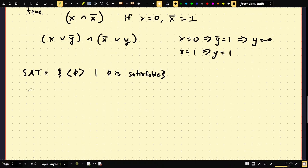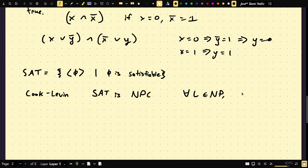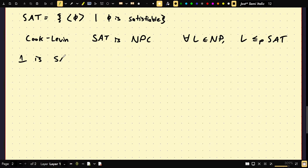What is the Cook-Levin theorem? It says that SAT is NP-complete. What does that mean? Every language in NP is polynomial time reducible to SAT. So let's prove that. Step one: Is SAT in NP? Yes. Our certificate is just a satisfying assignment, which can be checked in polynomial time. We plug in the assignment and compute the ANDs and ORs — it runs in poly time. The certificate is just the variable assignments and we check it in polynomial time. So SAT is in NP.